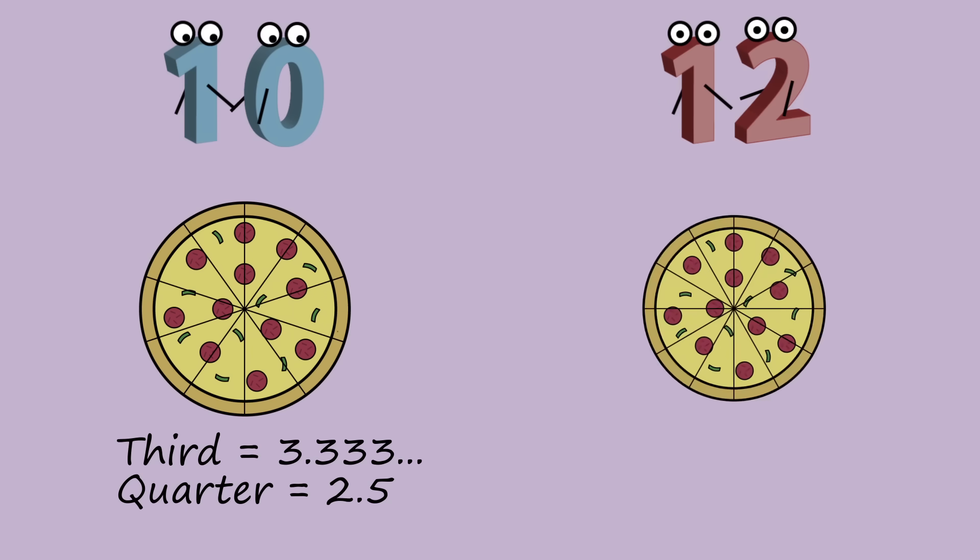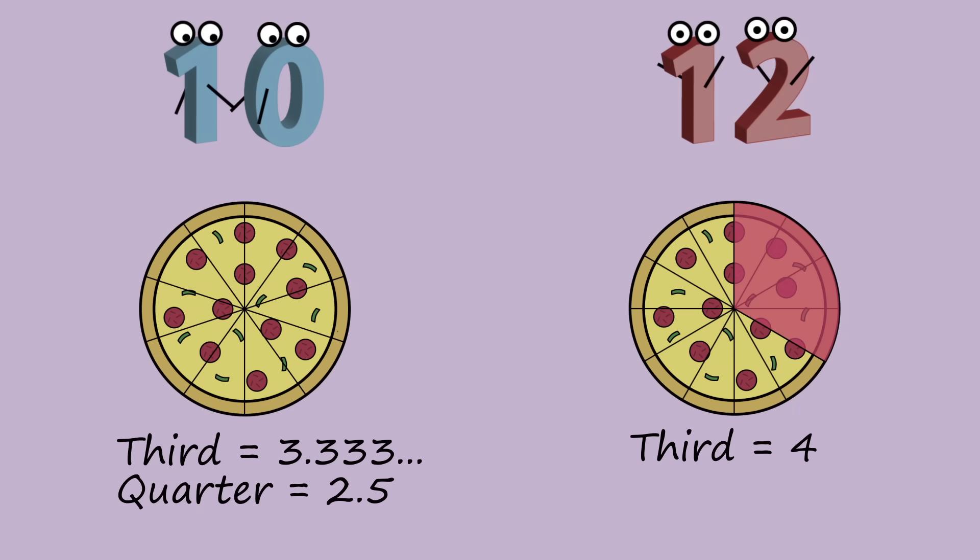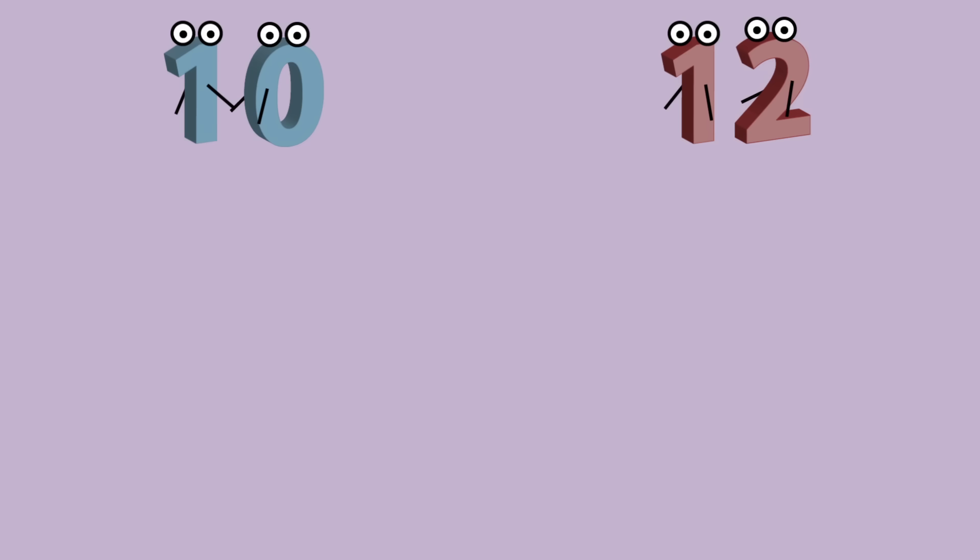In comparison, in base 12, a third of Doe is 4, and a quarter is 3. Or expressed as a percentage, a third is 40% and a quarter is 30%, or per gross as the term would now be called.